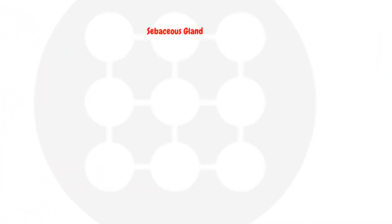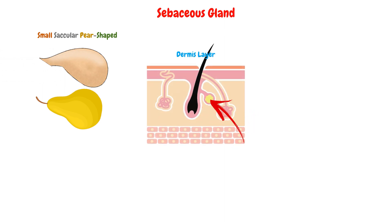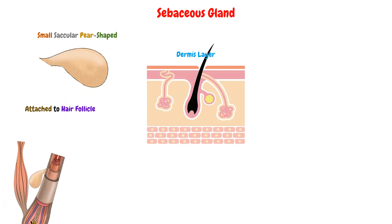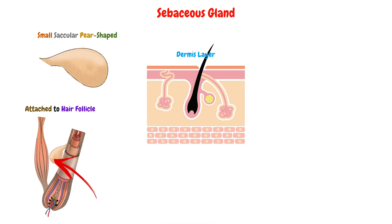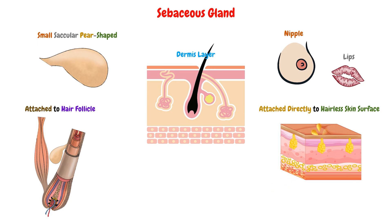The sebaceous gland is a small, saccular, pear-shaped structure which exists in the dermis layer, which is the deep layer of the skin. This gland exists in the skin either attached to the hair follicle, positioned between the hair follicle and the erector pili muscle, in which it secretes its product on the hair shaft, or attached directly to the hairless skin surface, such as the lips and the nipple, so it will secrete its product directly on the skin.